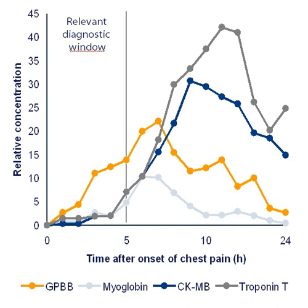The widespread use of the term biomarker dates back to as early as 1980. The term biological marker was introduced in the 1950s. In 1998, the National Institutes of Health Biomarkers Definitions Working Group defined a biomarker as a characteristic that is objectively measured and evaluated as an indicator of normal biological processes, pathogenic processes, or pharmacologic responses to a therapeutic intervention.